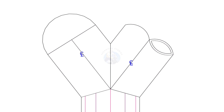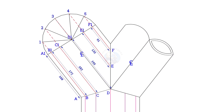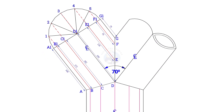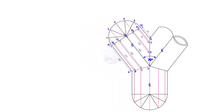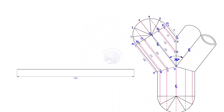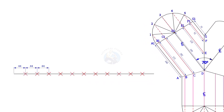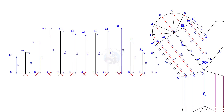To lay out the true length of the branches, the process is the same. Draw a half circle and divide it into 6 parts. Draw perpendicular lines as shown and note down the lengths. Draw the pipe circumference line, divide it into 12 equal parts, and draw vertical lines G, G1, F, F1, etc., then draw a curve as in the previous layout.